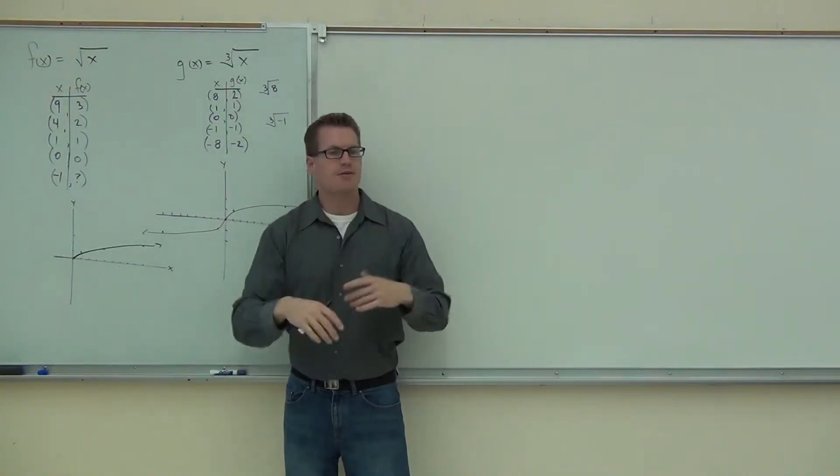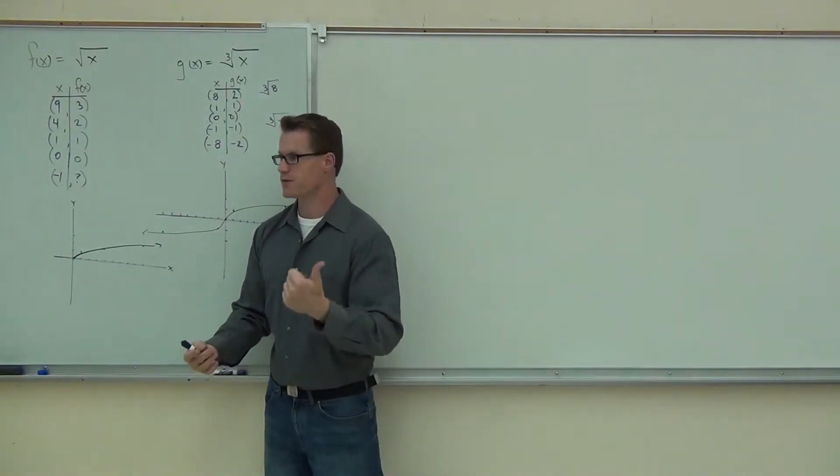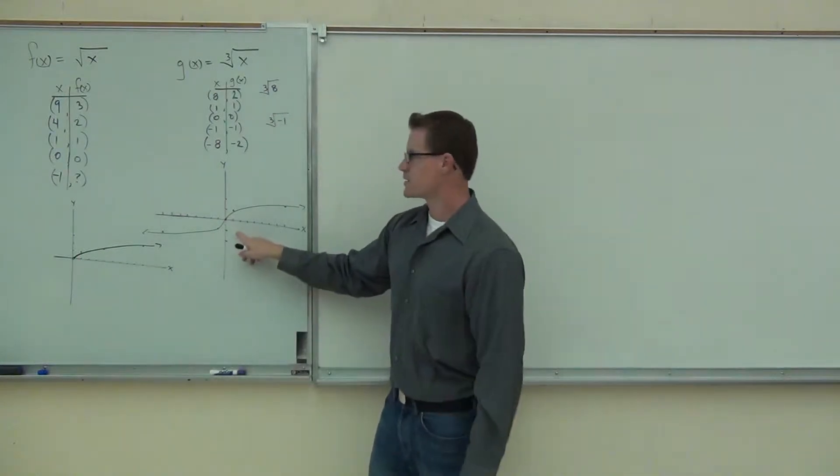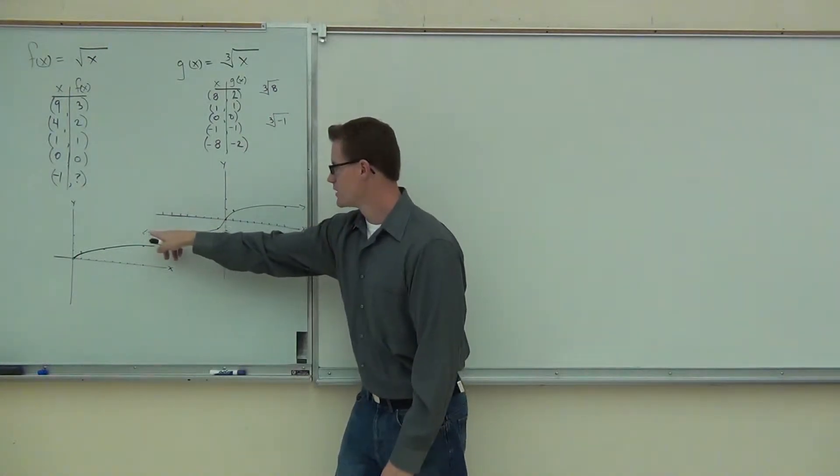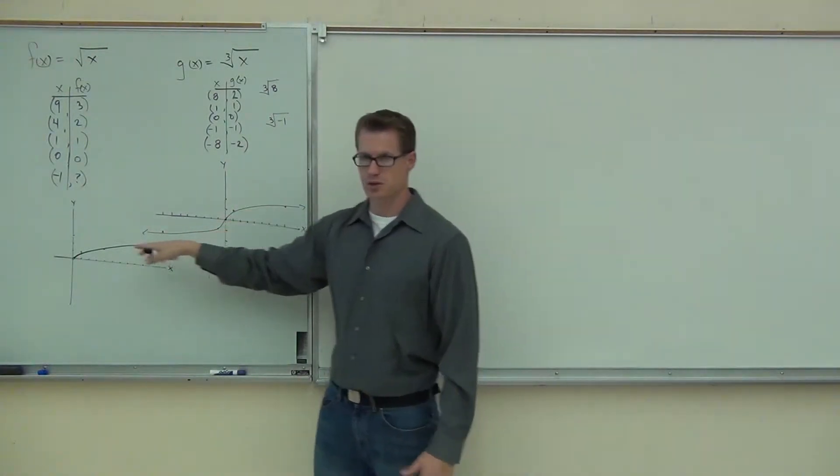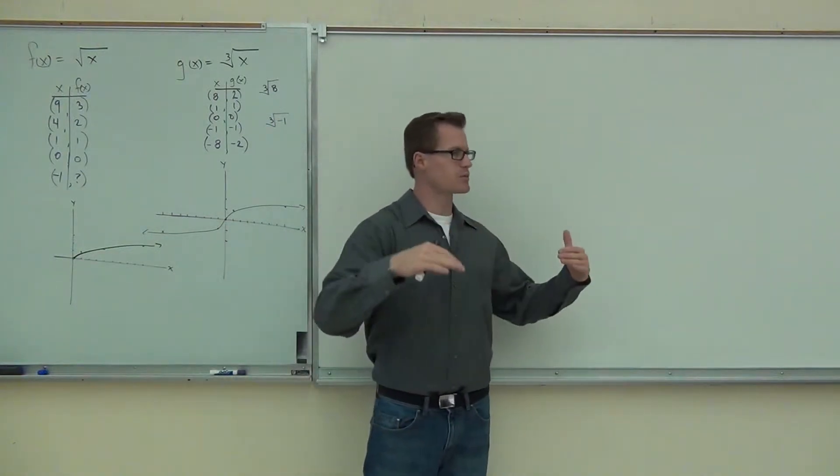Every odd power root - 3, 5, 7, 9 - will look something like this. It'll have this negative version as well because you can plug in negatives to it. So it'll be some sort of an S curve.